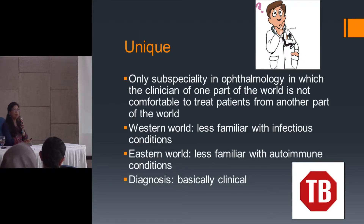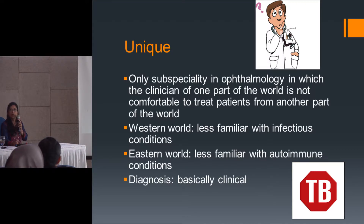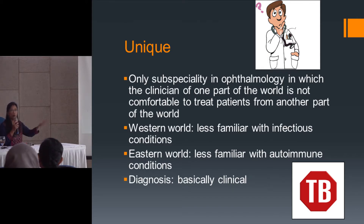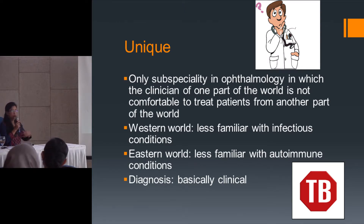The uniqueness of uveitis is that it is the only subspecialty in ophthalmology where a clinician in one part of the world is not comfortable treating patients from another part of the world. If you stay in one region, you become aware of the disease patterns prevalent there and are comfortable treating them. But if patients come from another part of the world or you go elsewhere to treat different races, you are not comfortable. Even very good uveitis centers are not always able to diagnose conditions when treating people from outside their region.